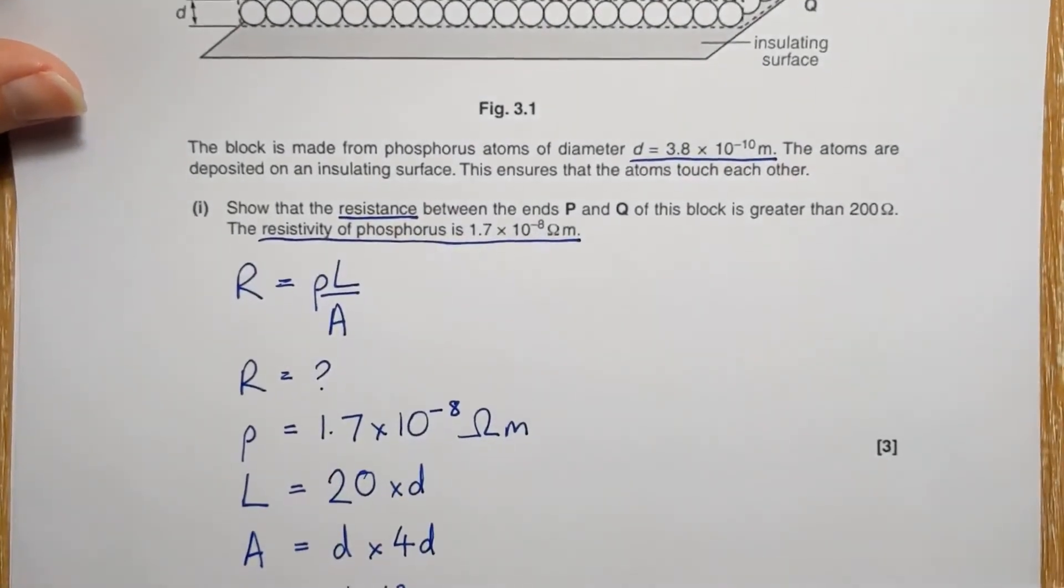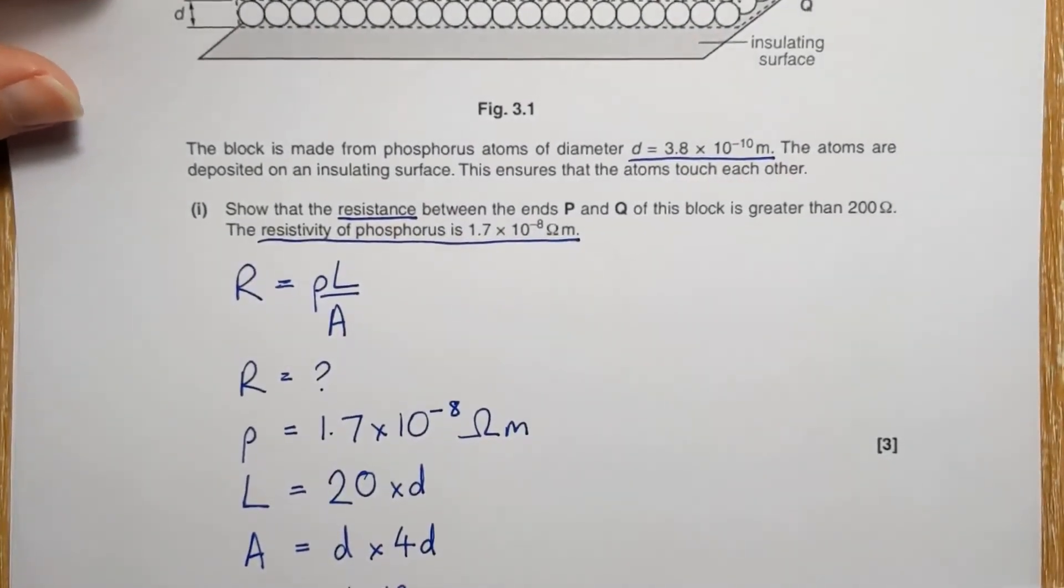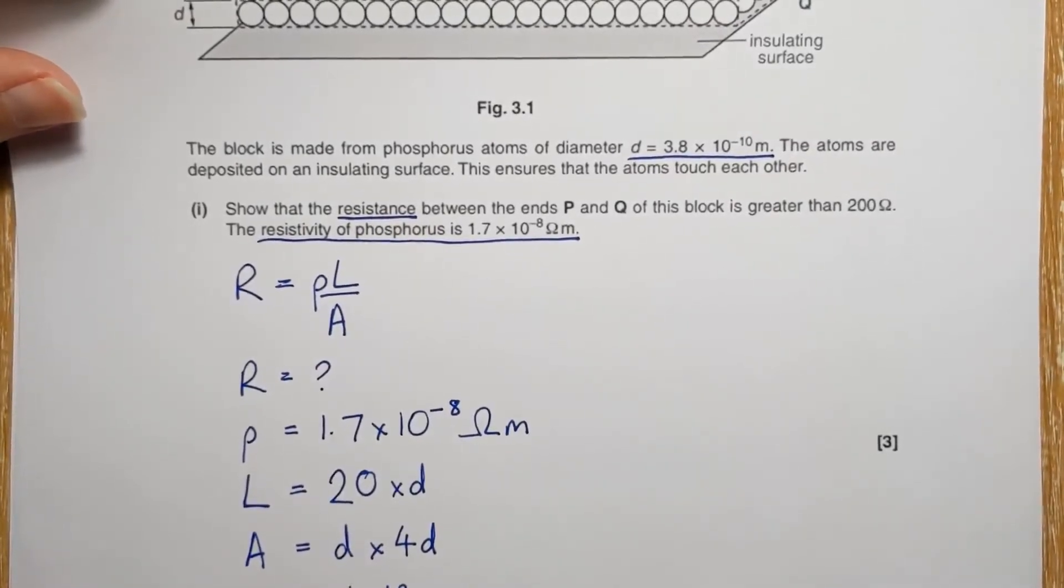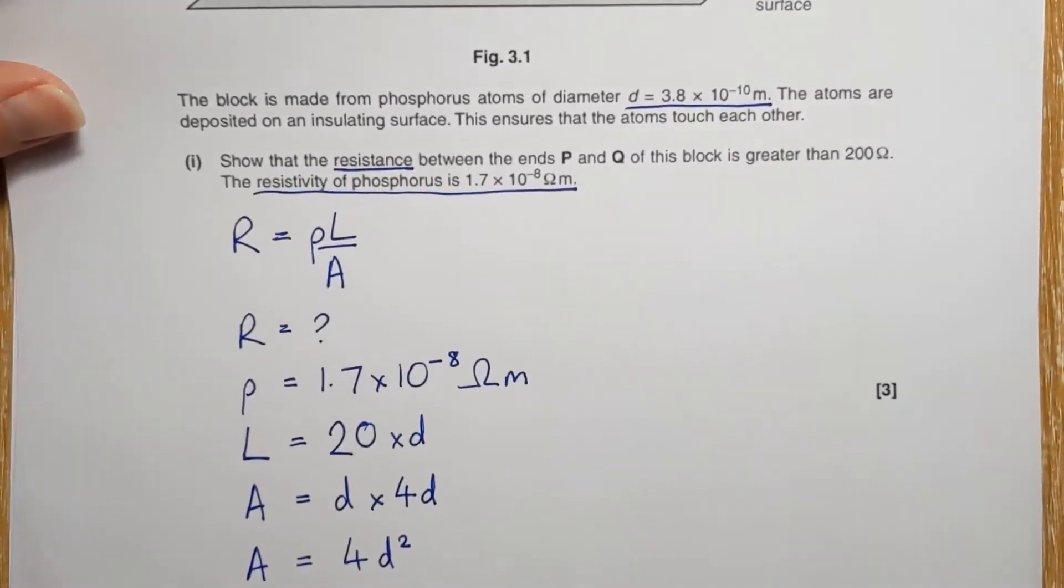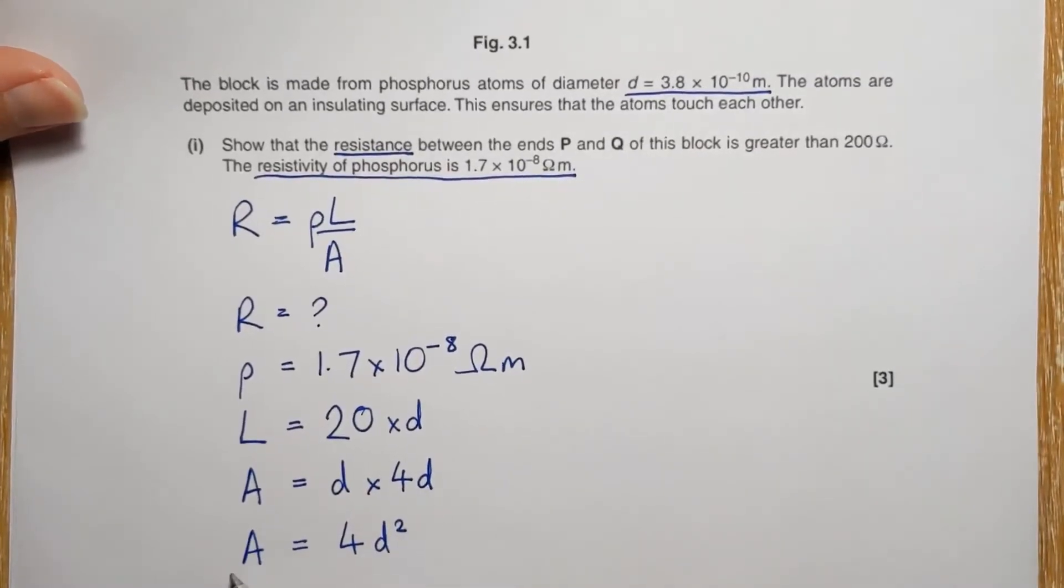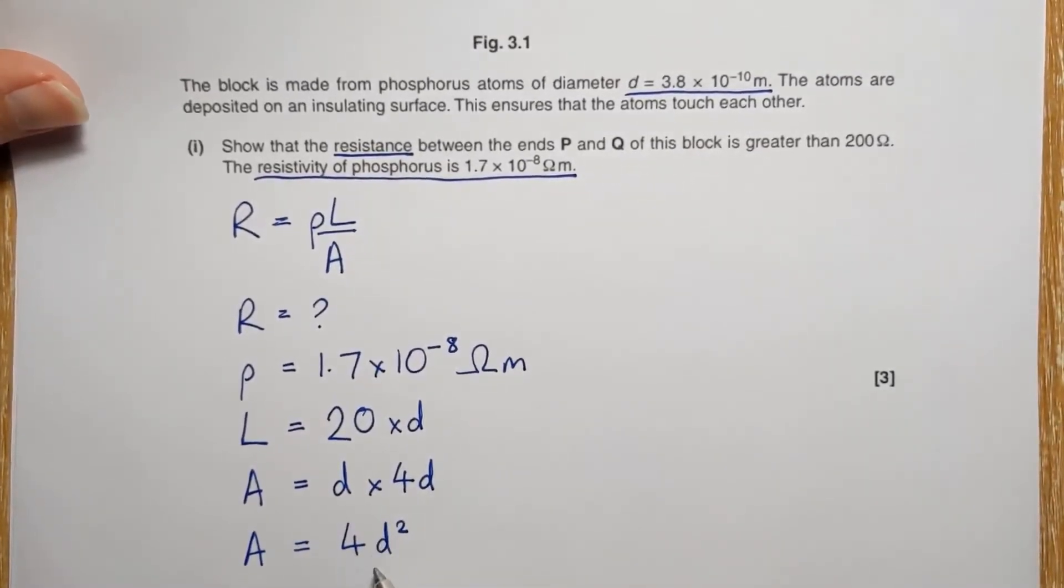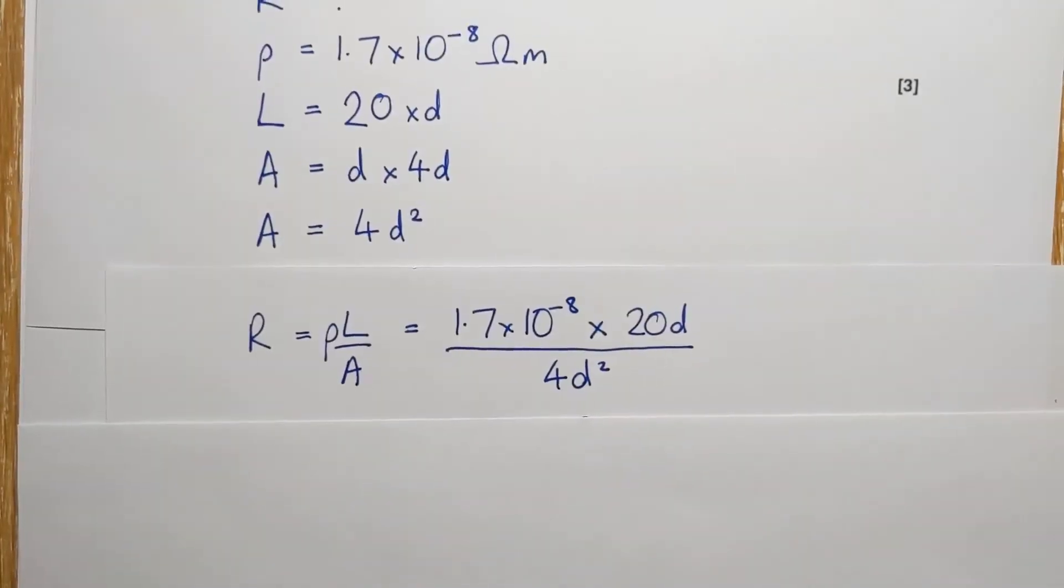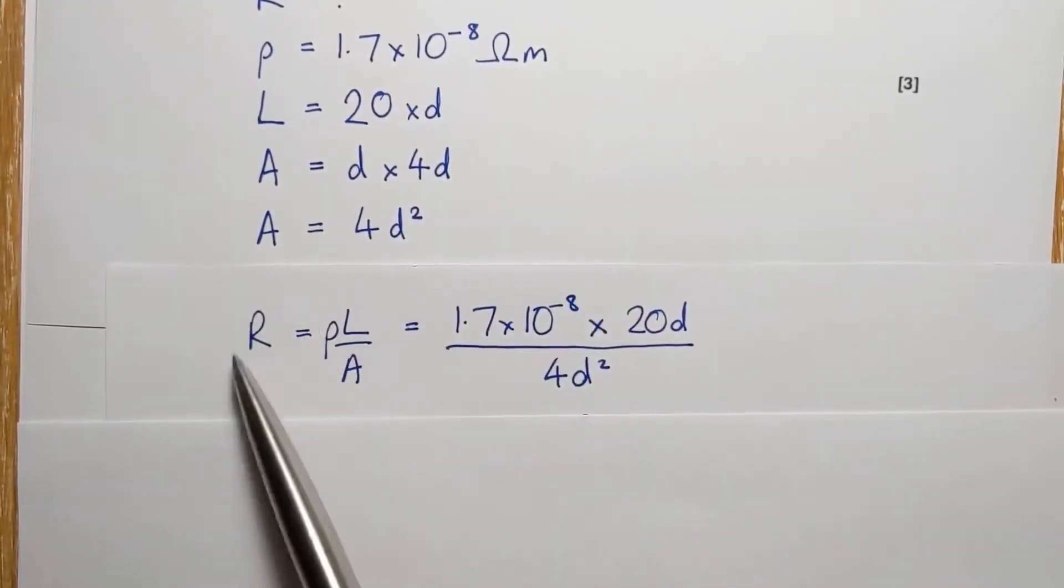Now you could, if you want, work out what those are and then put the numbers in. But here's a slightly quicker way. I think it's a quicker way anyway. So we're just going to simplify the cross-sectional area to 4D squared there. And then we're going to substitute those values into our formula.